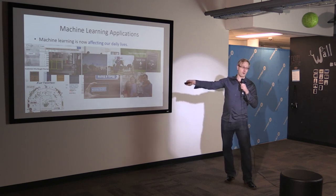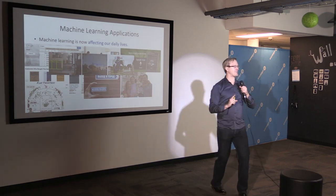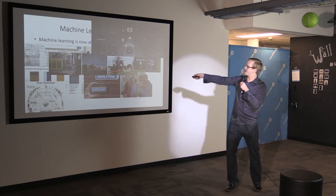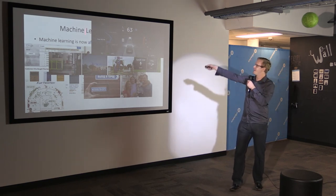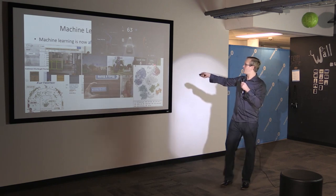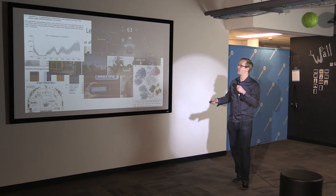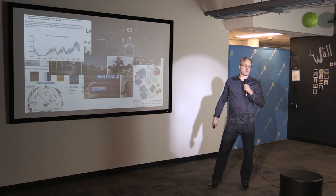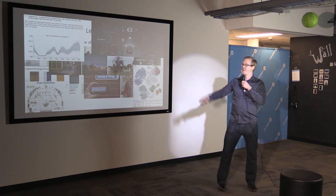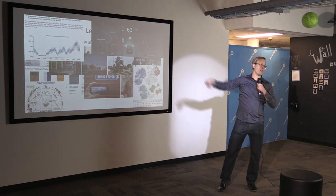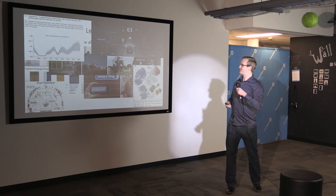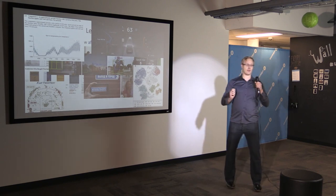Machine learning is used for scientific discovery — a machine learning visualization was used to find new types of leukemia. A former officemate wrote a program that basically takes money away from statistical consultants: you give it your regression dataset and it writes you a paper — the plot, the caption, the numbers — describing all the trends in your dataset, doing hypothesis testing and all that. He's now faculty at U of T.